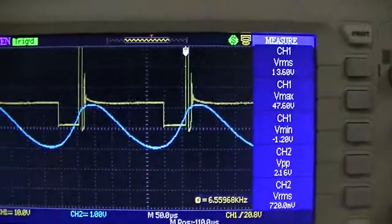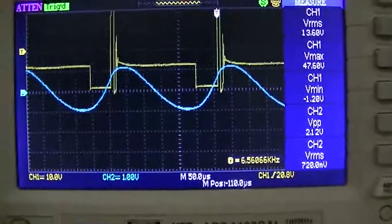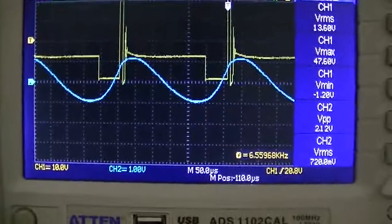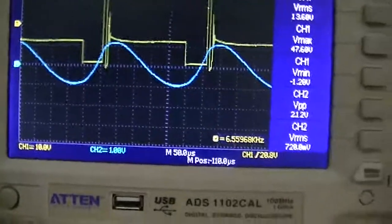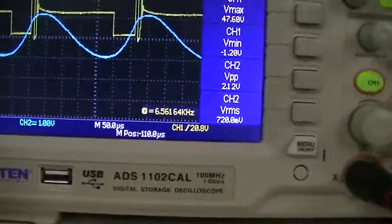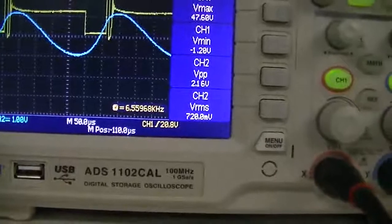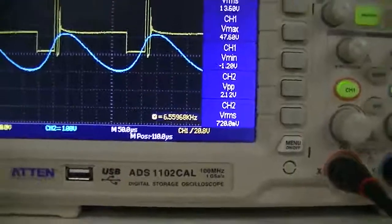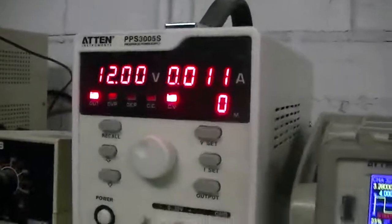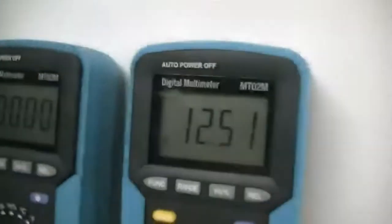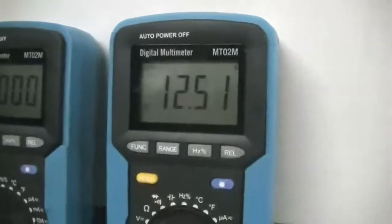So you can see our channel 2 waveform across our tank circuit has a peak to peak voltage of 2.12 volts. Our current draw is 11 milliamps at 12 volts and our charge battery is at 12.51 at the moment.